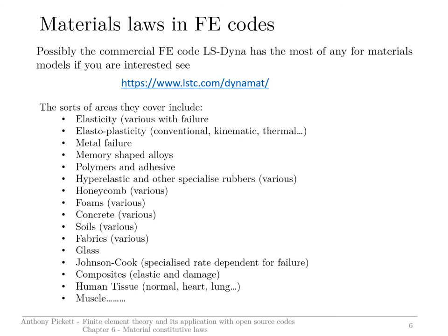I thought it might be interesting to have a look at other codes. Calculix is not particularly strong on constitutive models — it's got a good variation, certainly enough for any teaching purposes. But if you move on to some of the commercial codes, then over the last 20 years one of the emphases has been development of material models. I've listed key types of material models available in the code LS-DYNA. This is probably one of the codes with the most models, because it's used by a lot of research people, universities and industry. You'll see there the list: elasticity, elastoplasticity — but there will be a lot of variations of this for modeling different types of metals. There are failure models — this is not something really possible in Calculix, but some other codes have quite sophisticated models for representing failure.